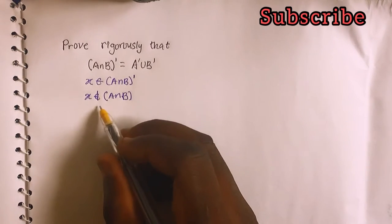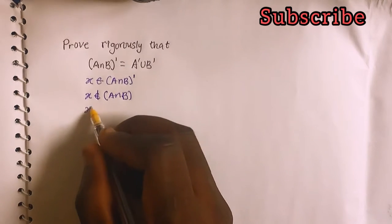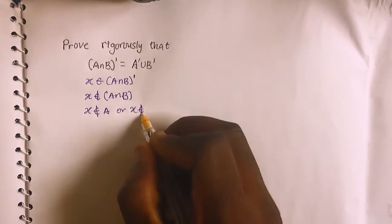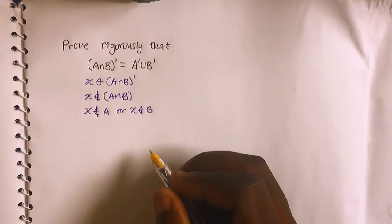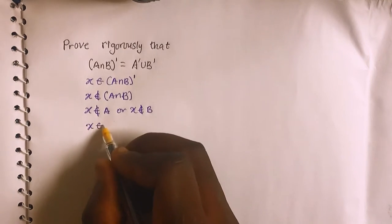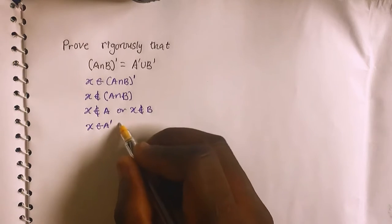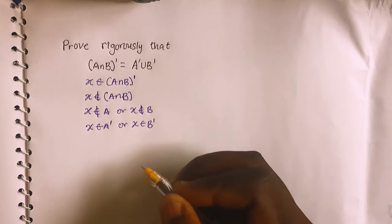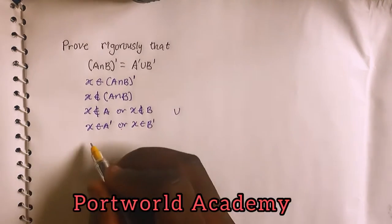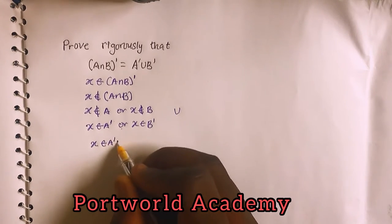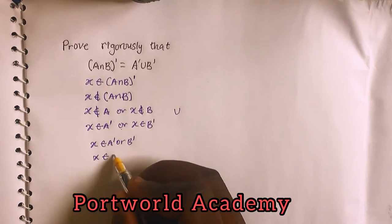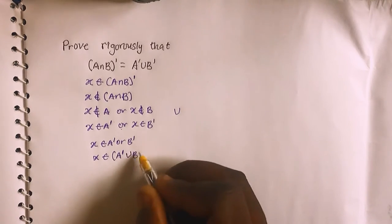If x is not a member of A intersection B, then I can say x is not a member of A or x is not a member of B. That means x is a member of A complement or x is a member of B complement. And since 'or' means union, I can say x is a member of A complement union B complement.